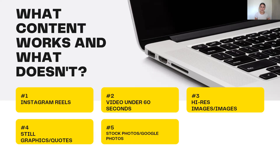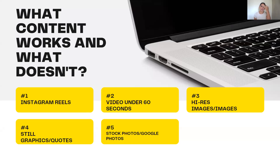The second content that works the most is video under 60 seconds. IGTVs tend to get a little less engagement. However, videos under 60 seconds do well. The third thing that gets the most engagement is high-res images and pictures — preferably of you, your family, your dog, your coworkers or team. If it is high-res, it's most likely going to get more engagement because it's clearer, brighter, and better quality.